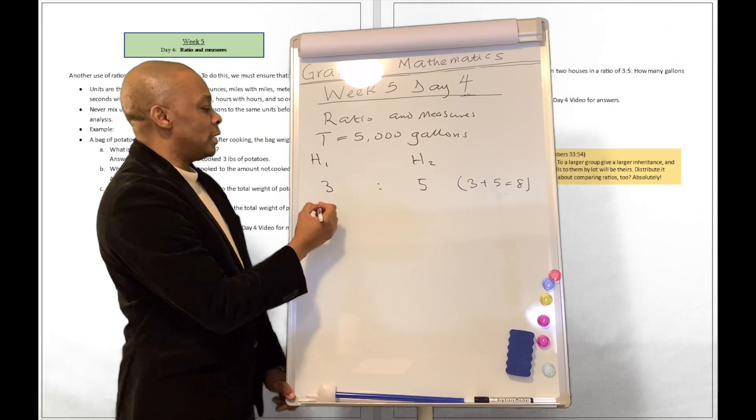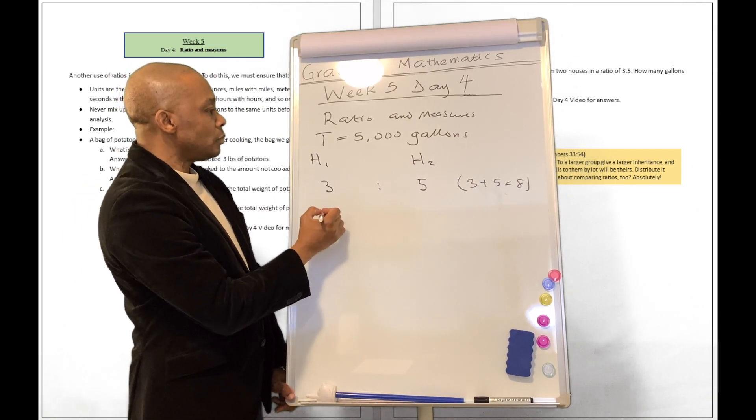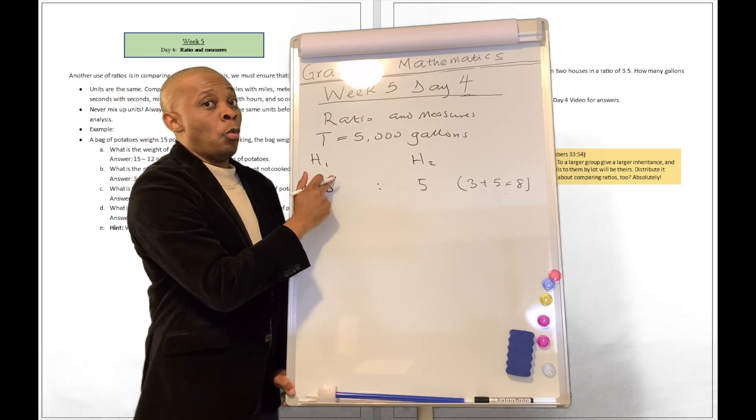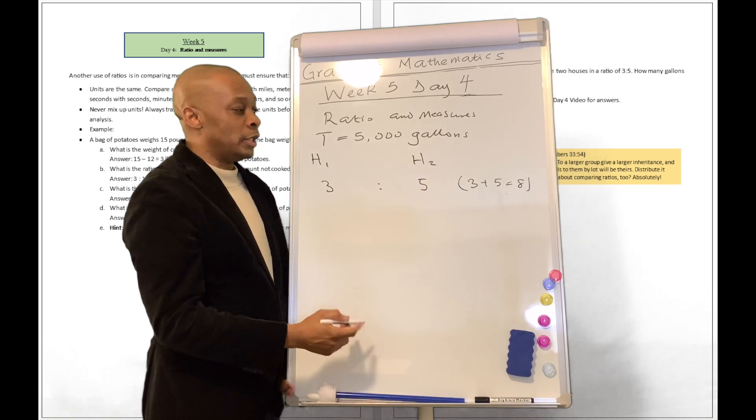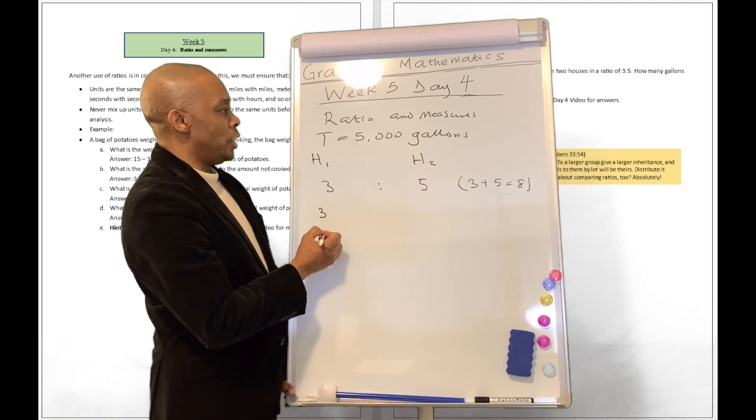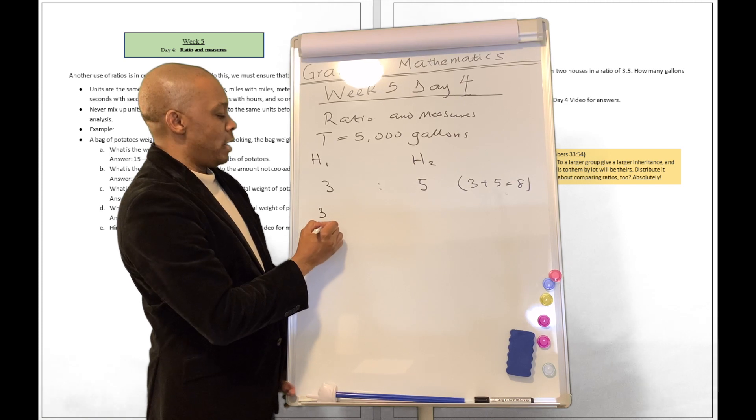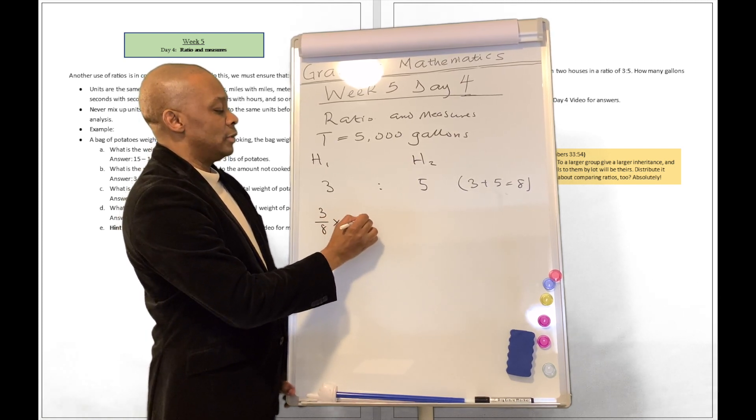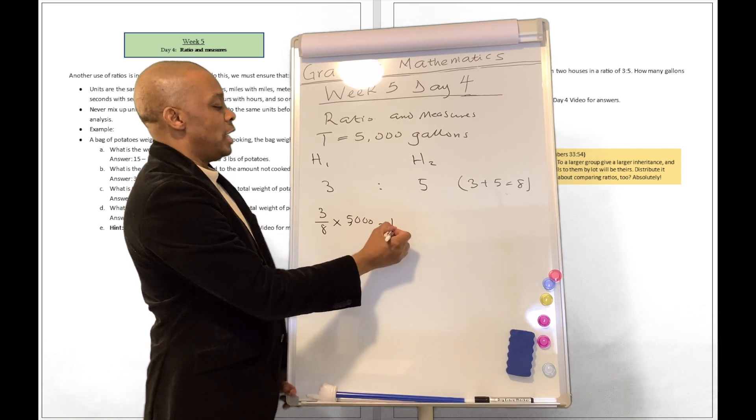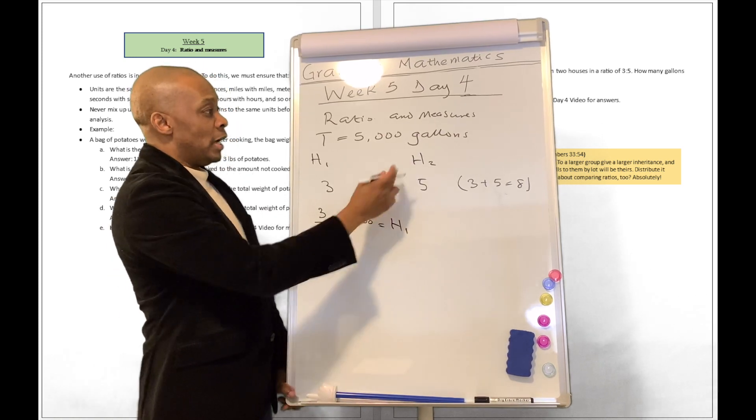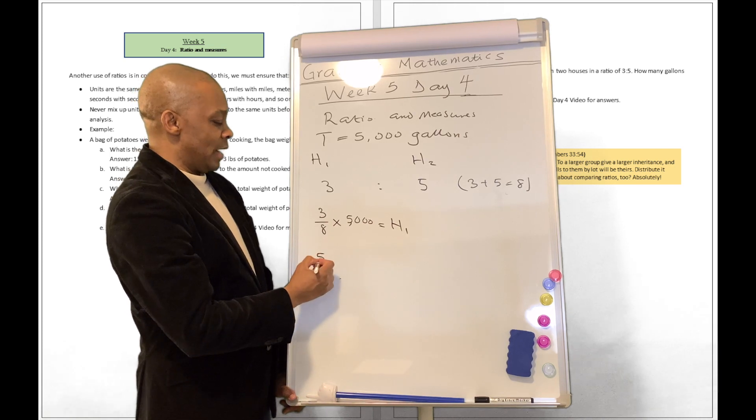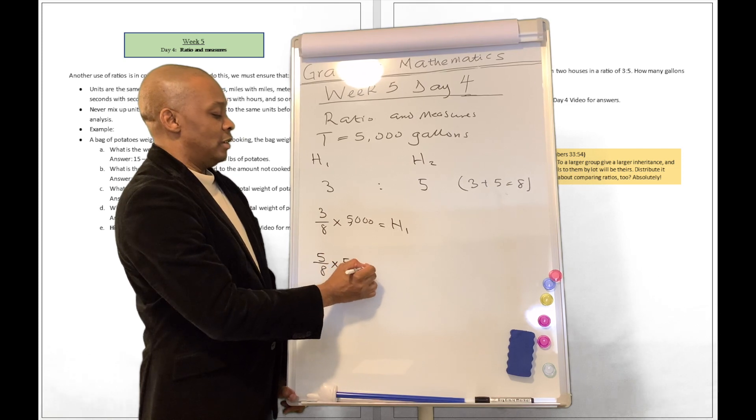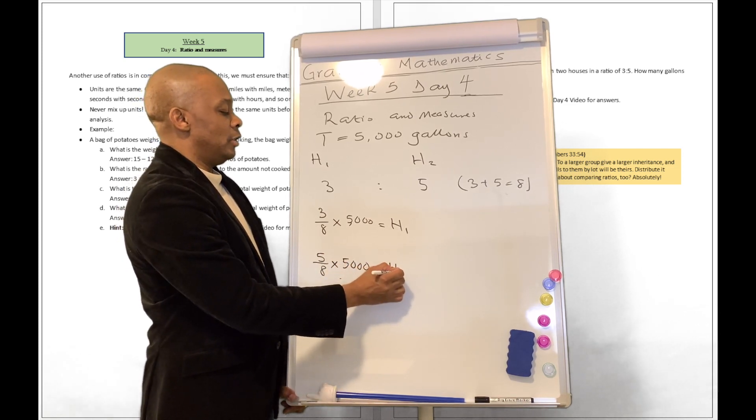So we have house number 1, house number 2, and the houses had something divided for them in a ratio of 3 to 5. The ratio of total is going to be 3 plus 5, which is equal to 8. How many gallons will house 1 get? It's going to be 3 divided by 8 multiplied by 5,000. H2 will be 5 divided by 8 multiplied by 5,000.